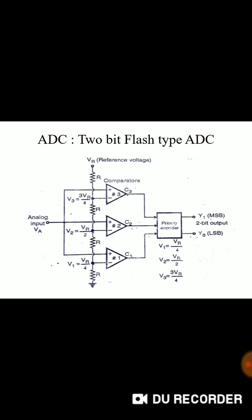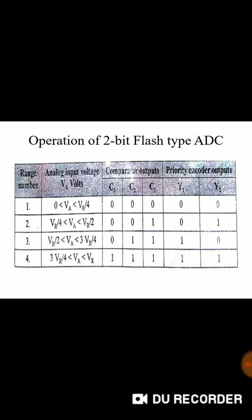V1 will be VR by 4, V2 will be VR by 2 and V3 will be 3 VR by 4. If analog input is between 0 to VR by 4 output will be 0. If it is between VR by 4 to VR by 2 output will be 0, 1. Between 2 VR by 4 to 3 VR by 4 it will be 1, 0. And for last 3 VR by 4 to reference value VR it will be 1, 1.